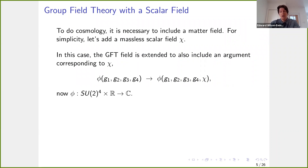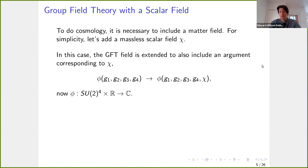As we saw on Tuesday, we have a group field theory for four-dimensional quantum gravity, which is essentially a scalar field with four SU(2) group elements. If we want to add a matter field, we add an extra argument chi to our GFT field phi, which corresponds to a scalar field. There are many types of matter that are interesting, but here, just to keep things as simple as possible, we'll look at a massive scalar field — pretty much the simplest case.